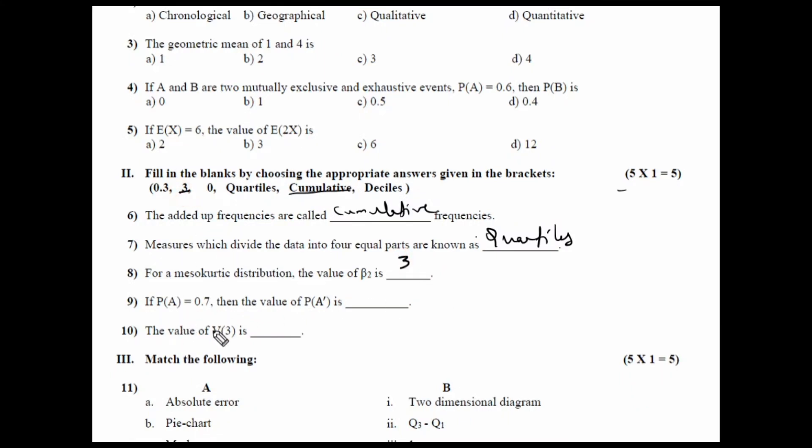Probability of A is 0.7. Then what is probability of A dash? Probability of A dash will be equal to 1 minus probability of A. So, if probability of A is 0.7, take it this side. So, 1 minus 0.7 is equal to probability of A dash that is 0.3 will be the answer.